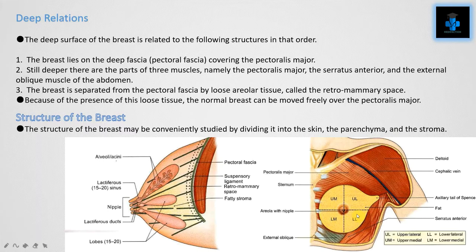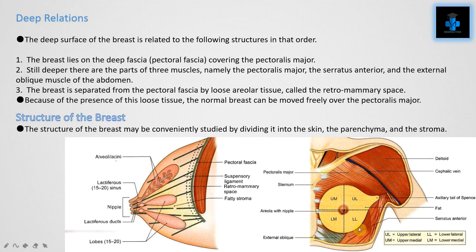Deep relations. The deep surface of the breast is related to the following structures. Number one, the breast lies on the deep fascia, or pectoral fascia, covering the pectoralis major. Still deeper, there are parts of three muscles: the pectoralis major, the serratus anterior, and the external oblique muscle of the abdomen. The breast is separated from the pectoral fascia by loose areolar tissue called the retromammary space. Because of this loose tissue, the normal breast can be moved freely over the pectoralis major.